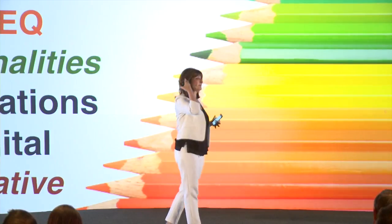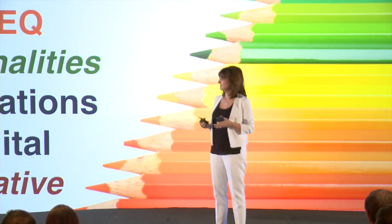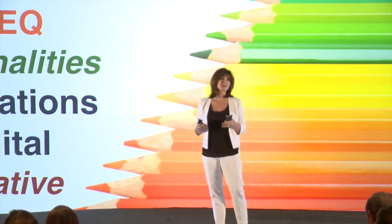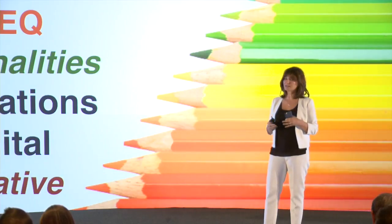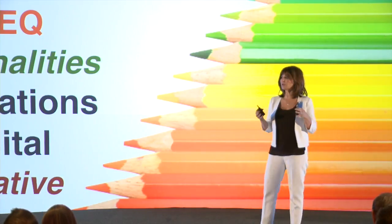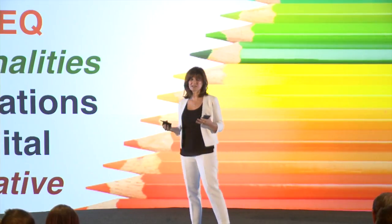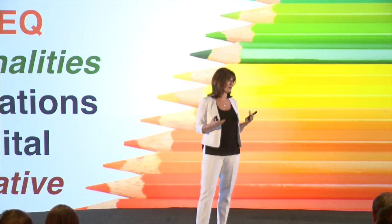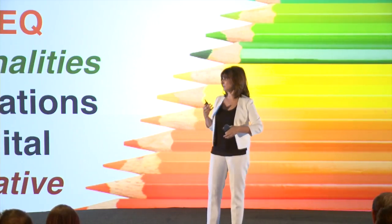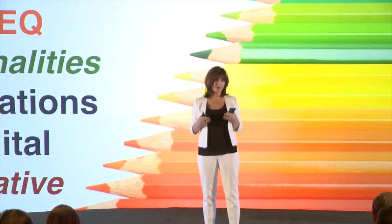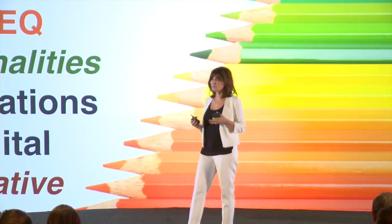Another aspect of the upgraded leadership operating system is multiple intelligences. In addition to multiple perspectives, we as individuals have multiple intelligences. For the last number of decades we've put a lot of power into IQ — he or she that has the highest IQ is obviously the most valuable asset. But that's now been questioned, because you can have somebody with high IQ but very low EQ — emotional intelligence.